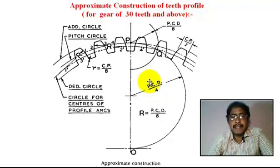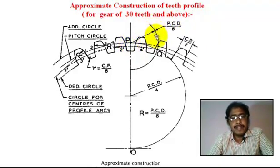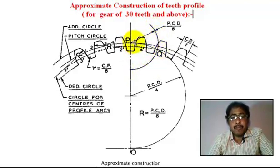Again we take a measurement with pencil compass. The radius is PCD by 8. With center P, we draw an arc. The arc radius is PCD by 8, drawn as a half circle arc.